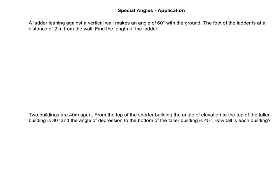A ladder leaning against a vertical wall makes an angle of 60 degrees with the ground. The foot of the ladder is at a distance of 2 meters from the wall. Find the length of the ladder. This sounds exactly like a grade 10 question, except we're going to do this without a calculator and get the exact answer instead of a rounded one. And it all starts with a diagram.